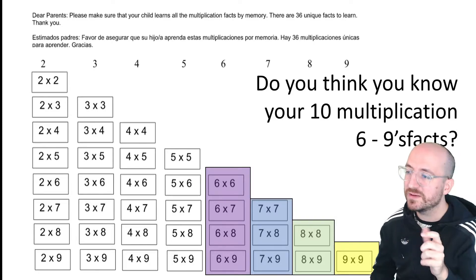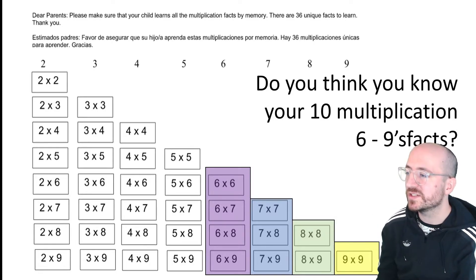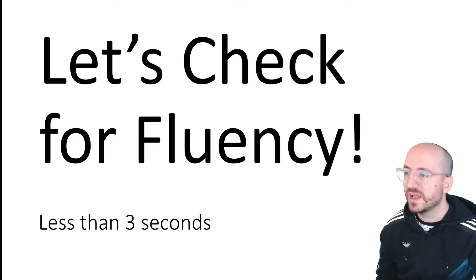Now of these facts, there's only ten of them. I do use the commutative property to mix them up to practice too, so like 6 times 7, you'll also see 7 times 6. So we're gonna practice this and see if you can answer before it shows up on the screen.